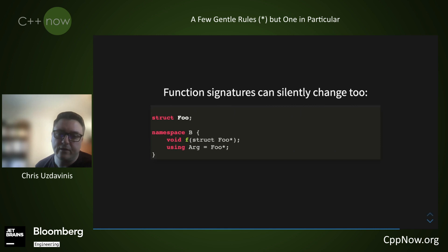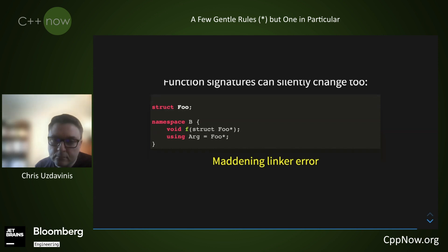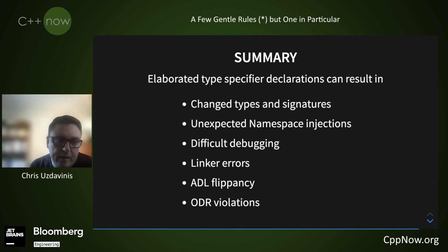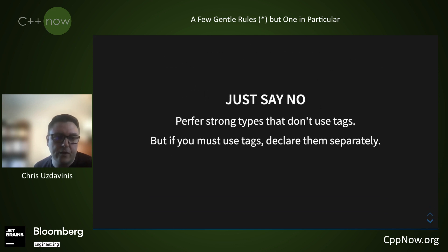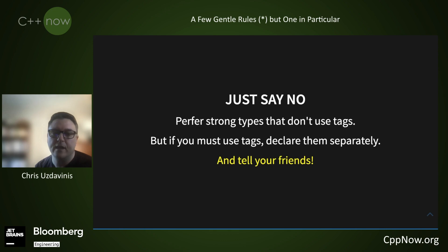As far as functions go, f takes either a pointer to foo in the global namespace or a foo in namespace B depending on its surrounding context. At least in this case, accidental overloading is not an ODR issue. In summary, elaborated type specifier declarations can result in a lot of problems, and though the syntax is shorter, I don't think it's worth it. So just say no — prefer strong types that don't use tags, but if you must use tags, declare them separately. Tell your friends. Thank you.